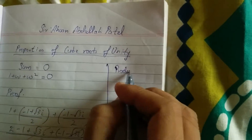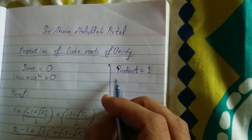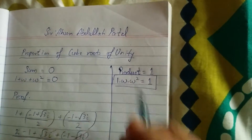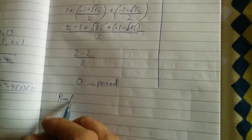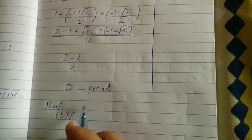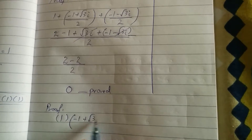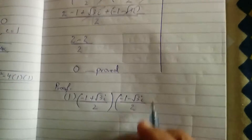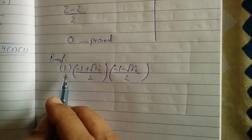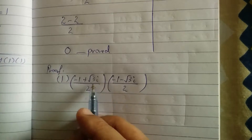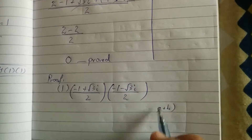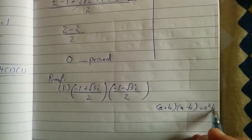Just like that, the product will be equal to 1 itself. That is 1 into omega into omega square equals 1. The proof: 1 into omega, whose value is minus 1 plus root 3 iota upon 2, and omega square is minus 1 minus root 3 iota upon 2. Multiplying with 1 gives no change, so we have minus 1 plus root 3 iota times minus 1 minus root 3 iota. Here we use the formula (A plus B)(A minus B) equals A square minus B square.